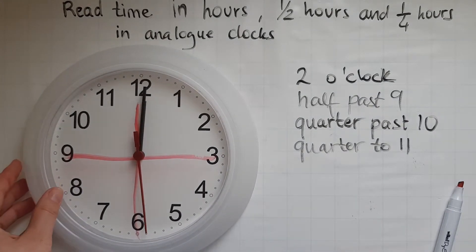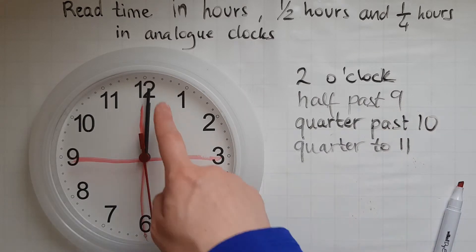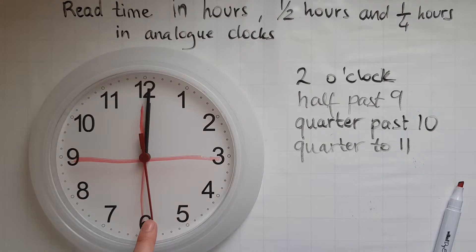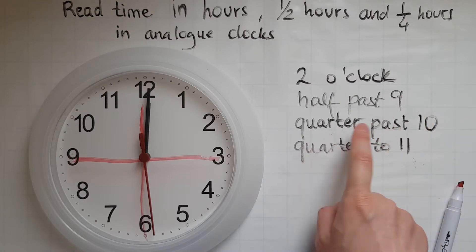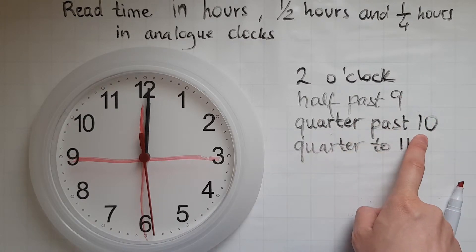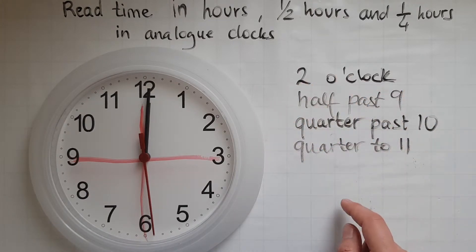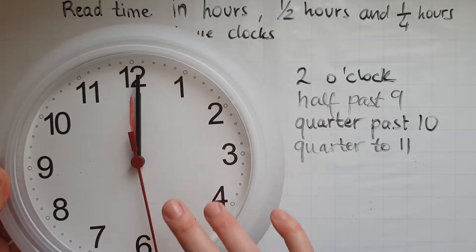So we've looked at hours — two o'clock. We looked at half hours, so when the minutes hand is on six. So we had half past nine, and quarter past ten, and quarter to eleven. Now I'm going to show these once more on the clock.